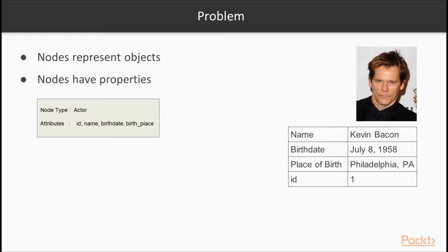In the case of our actors and our movies, the first thing we'll do is define a data model for our nodes. In this use case, our nodes will be actors or movies. Looking at an actor, we'll create a unique identifier in an ID field. We'll set a name, a birthdate, and a birthplace. In the case of Kevin Bacon, he was born July 8, 1958 in Philadelphia, Pennsylvania. Because he's our target and our favorite, we'll start with ID 1 for Kevin Bacon.